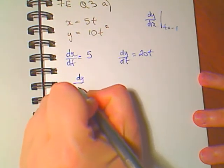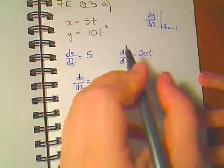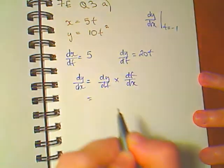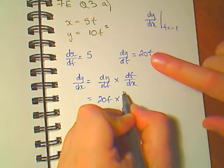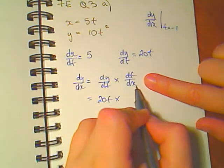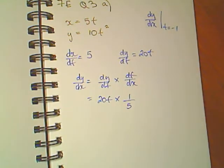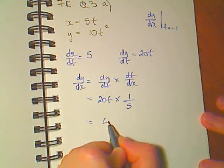Now dy/dx using our chain rule will be dy/dt times dt/dx. Well this is dx/dt, so dt/dx is 1 over this. Here I have 20 divided by 5 is 4t.